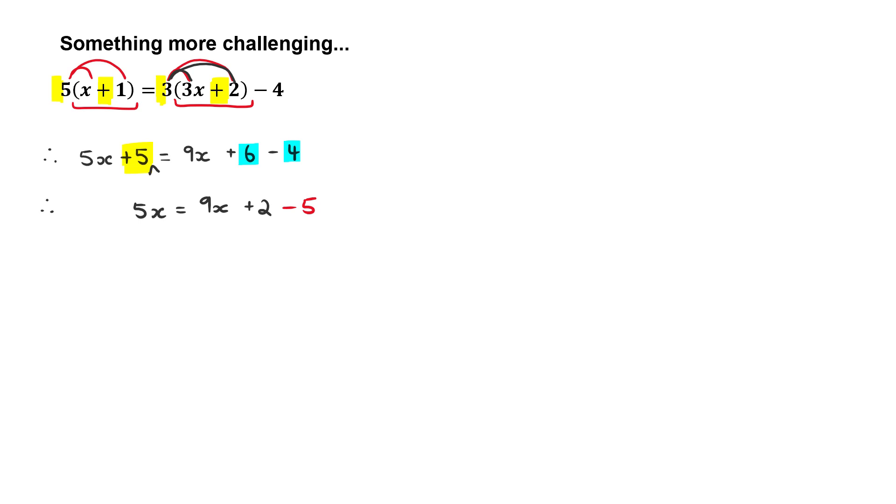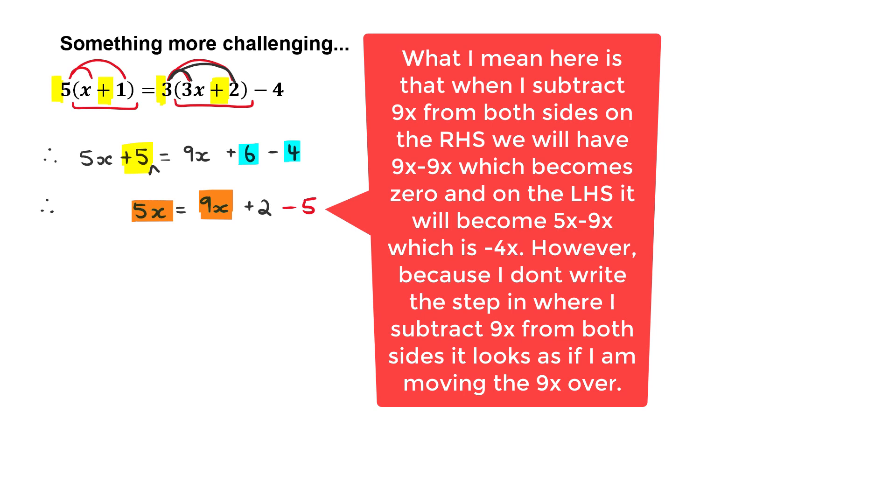Then, we can deal with the x's now. So, there we've got a 5x and a 9x. So, what I'm going to do is subtract 9x from both sides. So, basically what I'm doing is, in inverted commas here, I'm moving that 9x over, but not really. And we would get 5x minus 9x, which is minus 4x, is equal to 2 minus 5, which is minus 3.